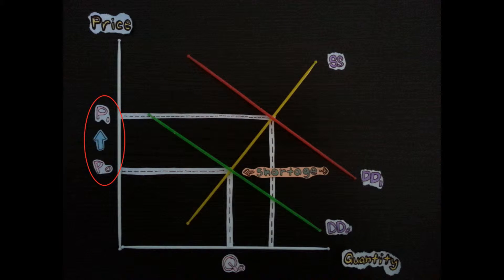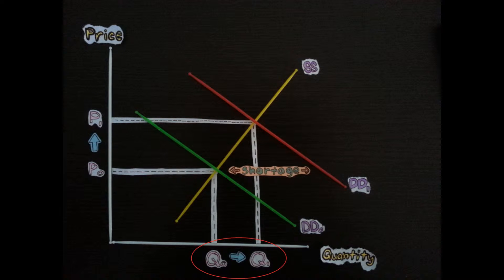Because of this shortage, the price of margarine would rise from P0 to P1, as consumers are now willing to pay more in order to obtain margarine. The quantity of margarine would increase from Q0 to Q1 to meet the new market equilibrium.